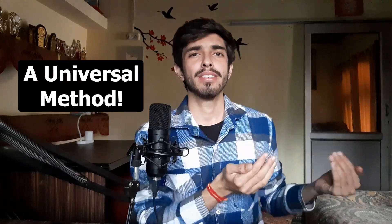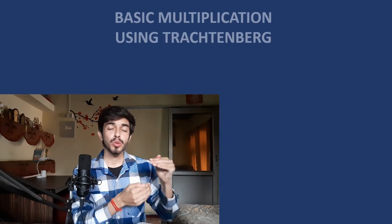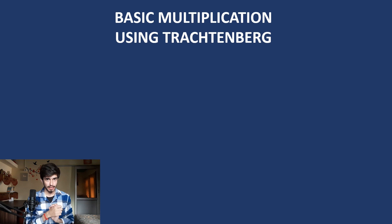The second good thing about this method is that it is universal. A lot of tricks in mental math apply to specific numbers, so you have to remember which trick applies to which numbers. But the Trachtenberg method is universal — you just have to memorize the keys, and once those keys are memorized, this method applies everywhere. In this video, we will learn how to do basic multiplication using this Trachtenberg system.